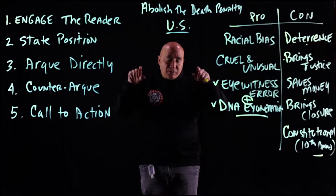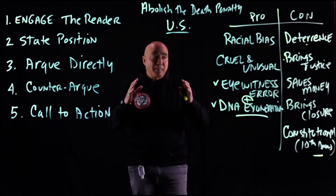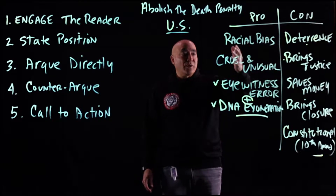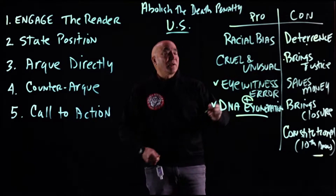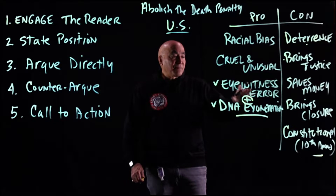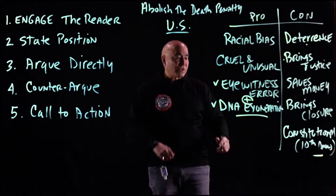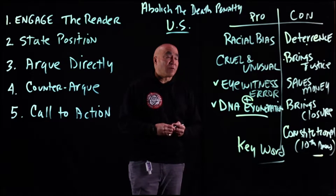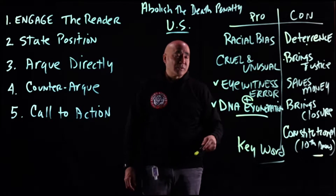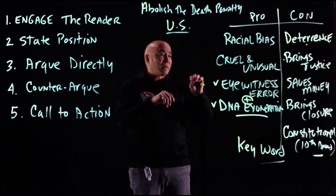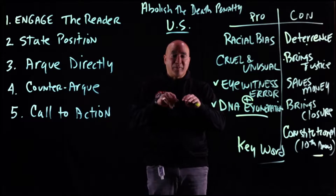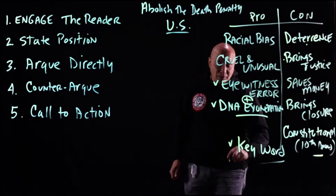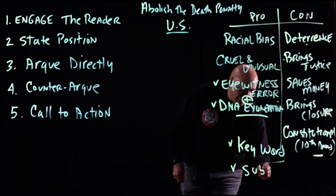Once you've done the pro-con list, you'll notice these terms are usually one or two words — very succinct and short. They also function as keyword searches, so you can have nice keyword searches for any of these issues. For example, if you want to find a source for cruel and unusual, you type in 'cruel death penalty' or 'unusual death penalty' or 'eyewitness error death penalty,' and you get a plethora of sources. These function as keyword searches but also as subtitles — I'll show you how that works in a second.